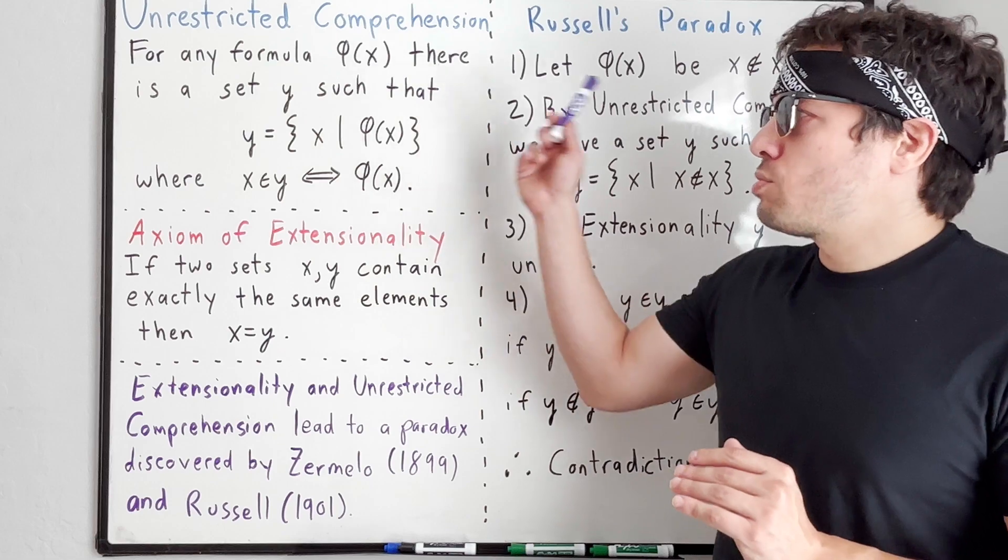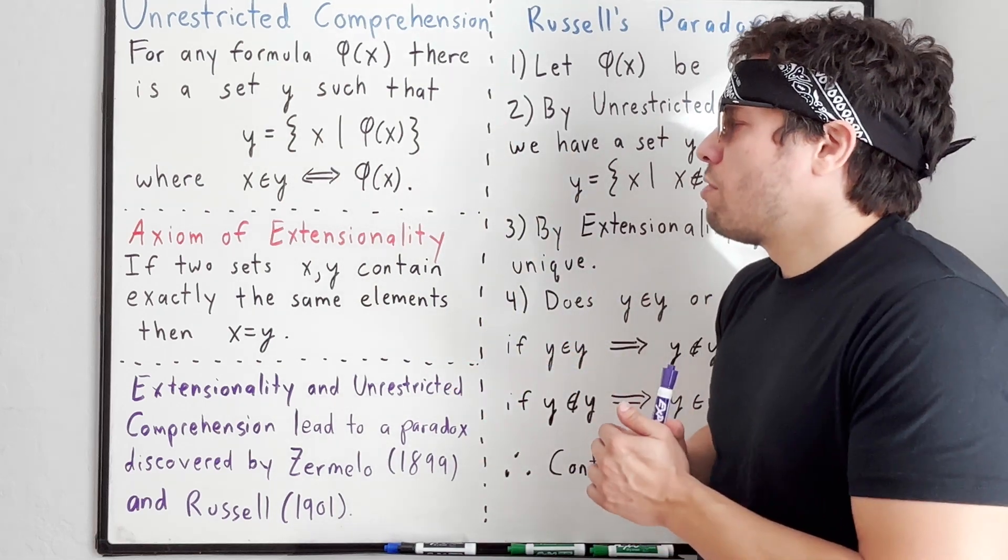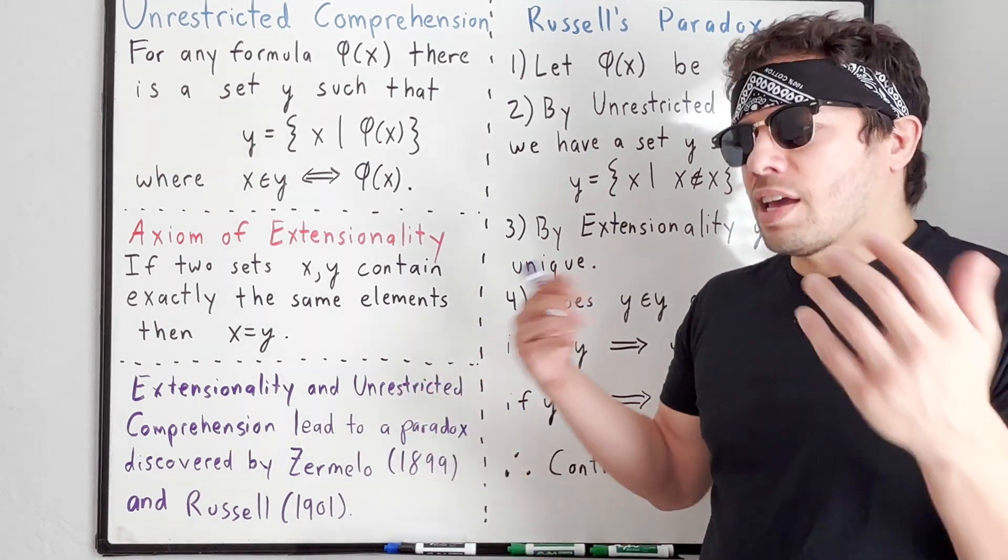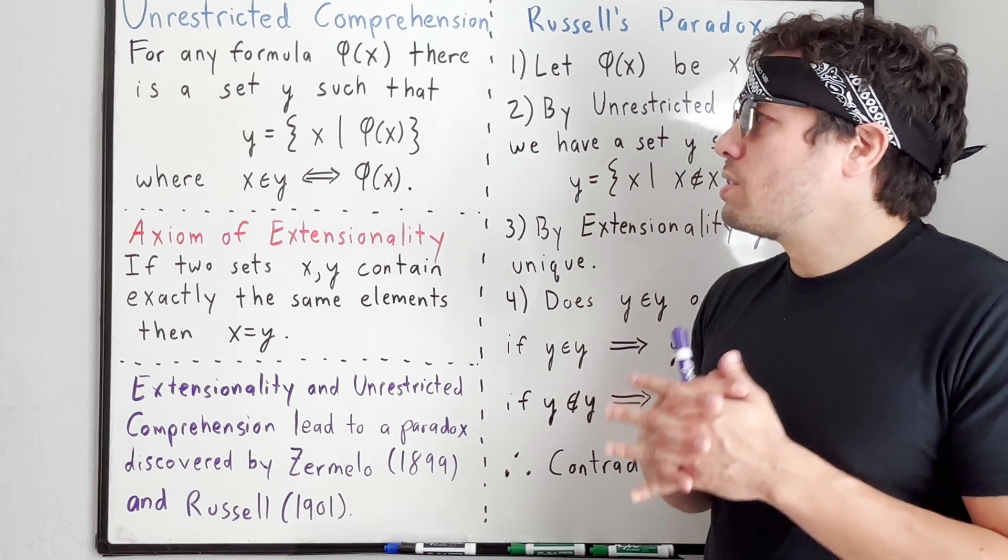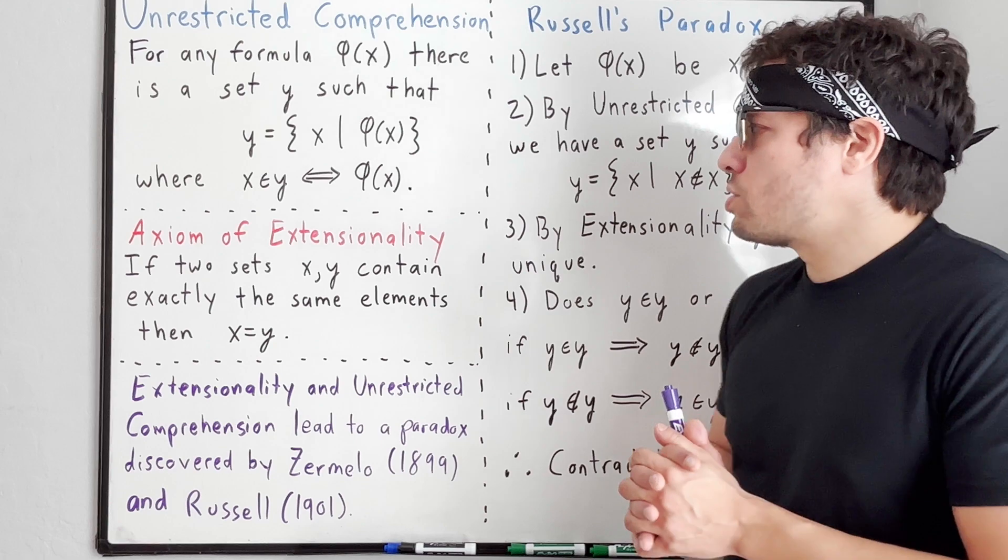There is one caveat. Unrestricted comprehension, as it's written here, is not found in Frege's system. Frege has this theory of concepts in their extension and he has this basic law 5 and it's through those two that you can get something like unrestricted comprehension.